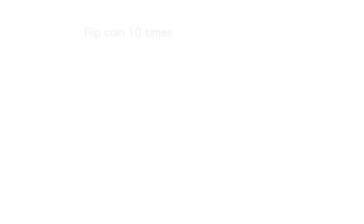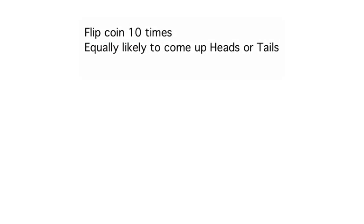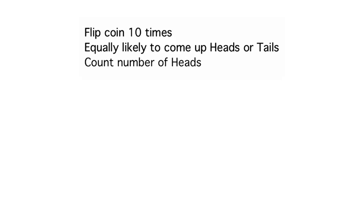Let's start with an example that we've already seen: flipping a coin ten times, which is equally likely to come up heads or tails. This has a well understood probability model in our theoretical world. The number of heads that can come up in ten flips could be anything from zero up to ten, and some of these values are more likely than others.